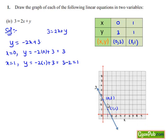So this is the required line joining the two points (0, 3) and (1, 1) that represents the given equation 3 equals 2x plus y graphically.